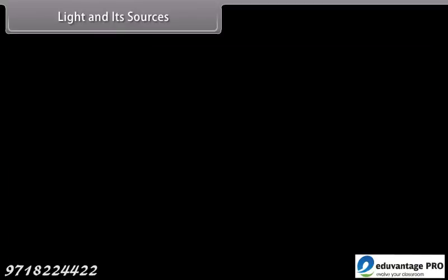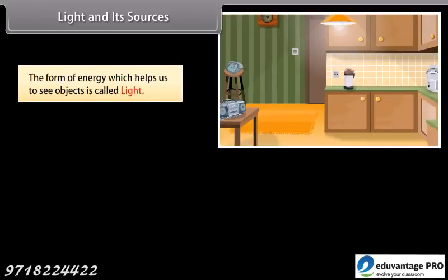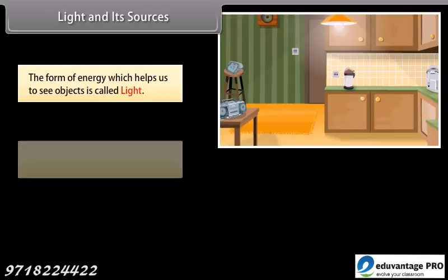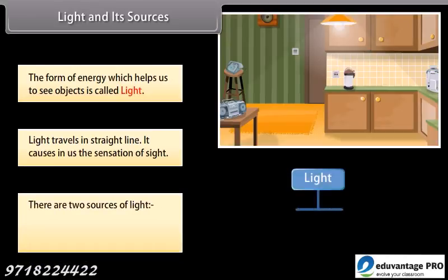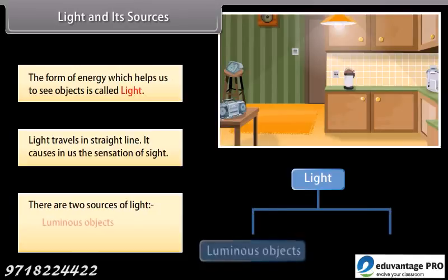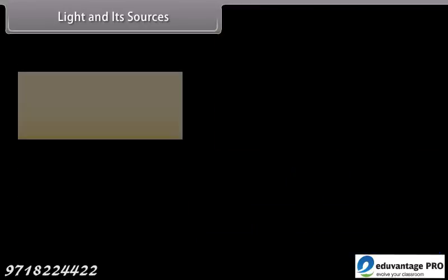Light and its sources. The form of energy which helps us to see objects is called light. Light travels in straight lines. It causes in us the sensation of sight. There are two sources of light: luminous objects and non-luminous objects.